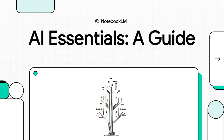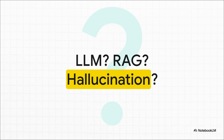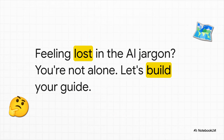Alright, let's jump right in. Today we are cutting through all the noise to build your essential guide to the language of artificial intelligence. Think of this as your personal AI translator. If you've been paying any attention to tech lately, you've probably seen terms like these flying around everywhere — LLM, RAG, hallucination. It can feel like you're trying to learn a whole new language overnight. But don't worry, you are absolutely not alone, and you're in exactly the right place. In the next few minutes, we're going to take all that confusing jargon and turn it into simple, powerful ideas that you can actually understand and use.